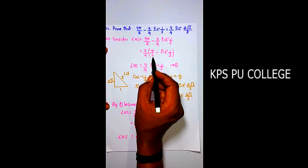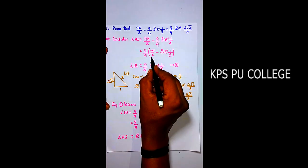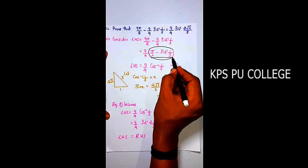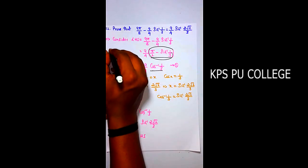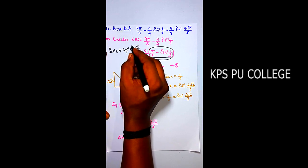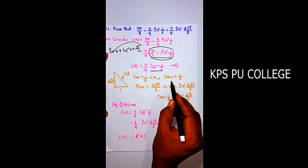Factor out 9/4: LHS = (9/4)[π/2 - sin⁻¹(1/3)]. Using the identity sin⁻¹(x) + cos⁻¹(x) = π/2, we have π/2 - sin⁻¹(1/3) = cos⁻¹(1/3). So LHS = (9/4)cos⁻¹(1/3). Let cos⁻¹(1/3) = x, so cosx = 1/3. Construct a right angle triangle with adjacent = 1 and hypotenuse = 3.